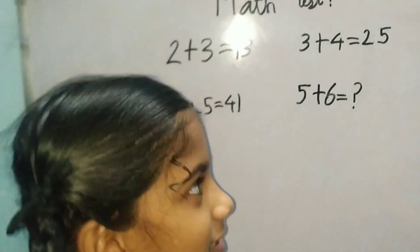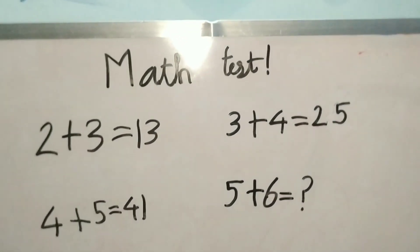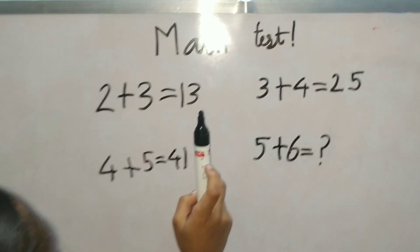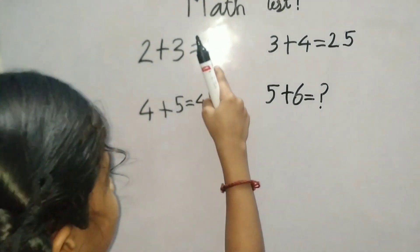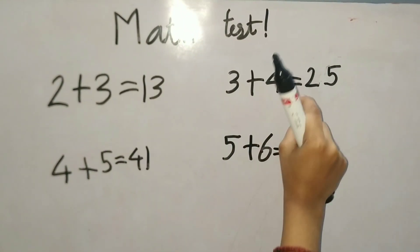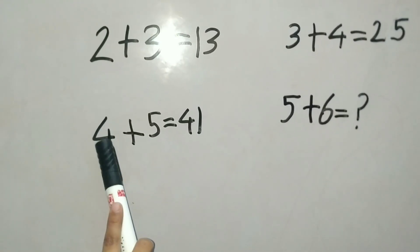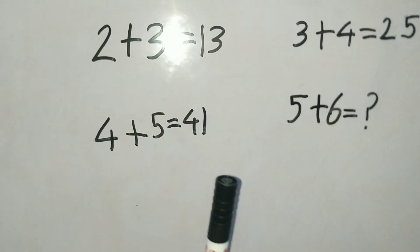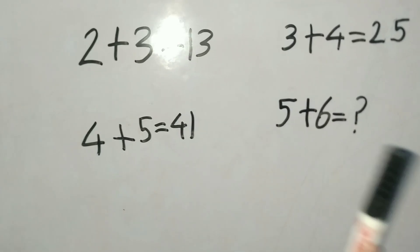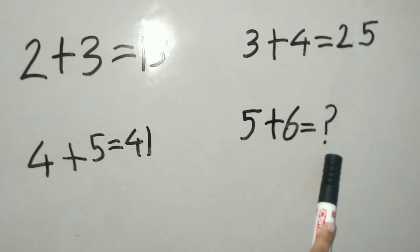Hi. Max has it. 2 plus 3 equal to 13. 3 plus 4 equal to 25. 4 plus 5 equal to 41. 5 plus 6 equal to what?